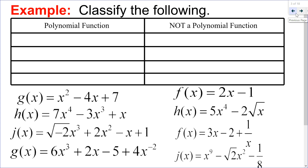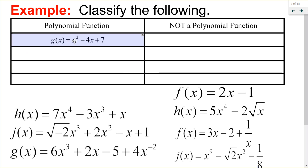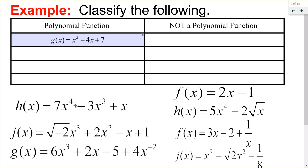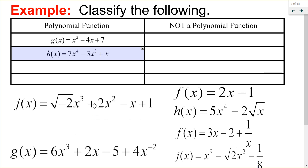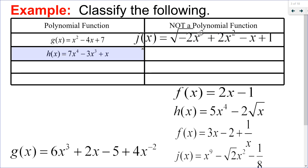Let's make sure we understand exactly what polynomials are. I have a set of eight different expressions. I want to classify them as polynomial or not polynomial. g of x is a quadratic function, so that's a polynomial — all exponents are whole numbers and coefficients are real numbers. h of x is a quartic function, so that's also a polynomial. j of x appears to be a polynomial in terms of the exponents, but the square root of negative 2 is not a real number, so that's not a polynomial.